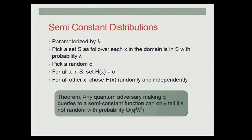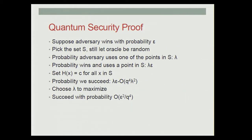The bulk of the technical work in the paper goes to proving the following theorem: an adversary cannot distinguish this type of oracle from a random oracle as long as lambda is small. The high-level overview is that since the adversary cannot distinguish the semi-constant distribution from a random distribution, if it broke the underlying scheme it did so even with the semi-constant distribution. But we have inserted our challenge C into a significant fraction of the oracle inputs, so the adversary will use C to solve its problem with some significant probability, and if that happens we are able to solve our problem.